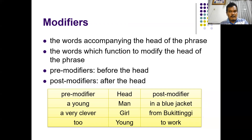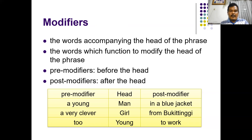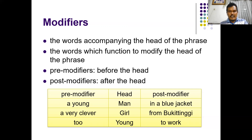So we have two kinds of modifiers: pre-modifiers and post-modifiers. In the phrase 'a young man in a blue jacket,' the head is 'man,' which is a noun, so this is a noun phrase. 'A young' is the pre-modifier and 'in a blue jacket' is the post-modifier. The phrase must have a core; all other words belong to the modifiers, which can be either pre-modifiers or post-modifiers.